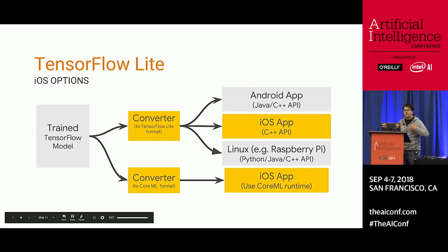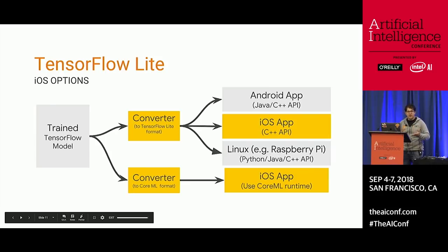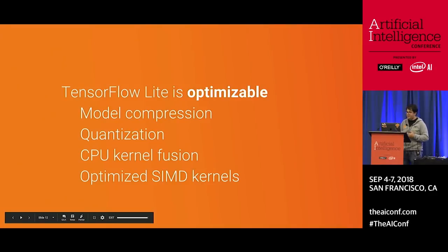Portability is achieved through the TensorFlow Lite file format. Once you have a trained TensorFlow model — authored in Swift, Python, or whatever you use — you produce a saved model in graph form. This serialized form is then converted to TensorFlow Lite format, which is your gateway to running on all these different platforms. We also have a special converter that allows you to go to CoreML if you want to target iOS in a special way.